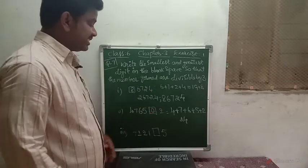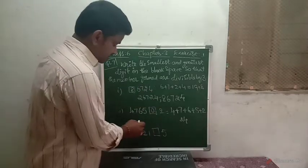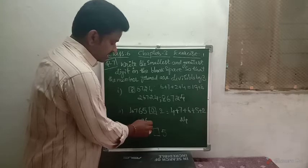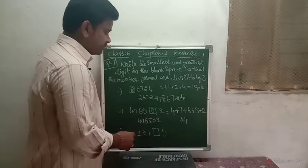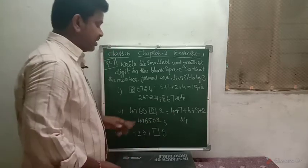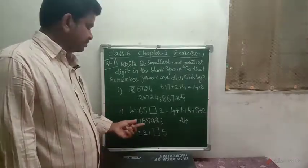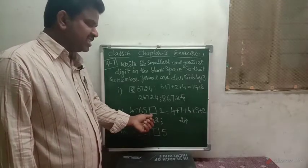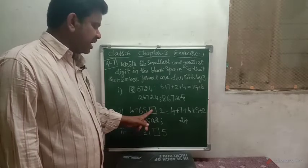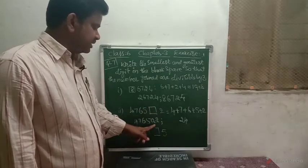So this is one number: 4, 7, 6, 5, 0, 2, which is also divisible by 3 by writing 0 in the space given. That 0 is the smallest digit. We place it in the blank and the number formed is divisible by 3.